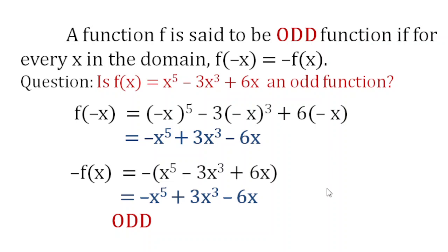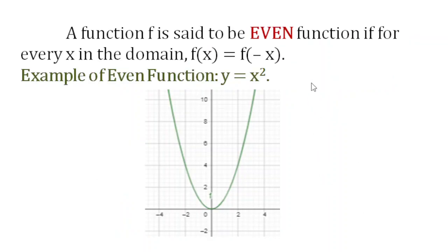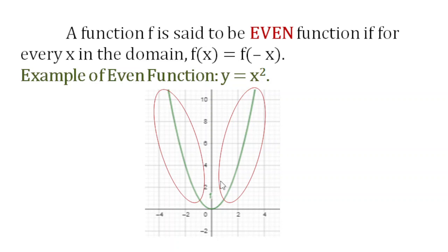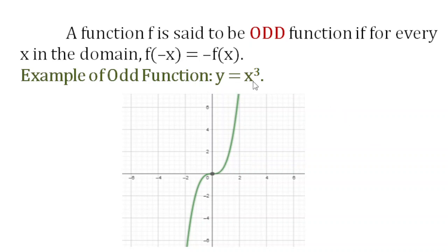Why do we identify functions as even or odd? Because if a function is even, its graph is symmetric about the y-axis. For example, y equals x squared is an even function — the part on the right is symmetric to the part on the left. For odd functions, for example y equals x to the power of 3, the graph shows that the part in quadrant 1 is symmetric to the part in quadrant 3 about the origin. That is one of the characteristics of an odd function.